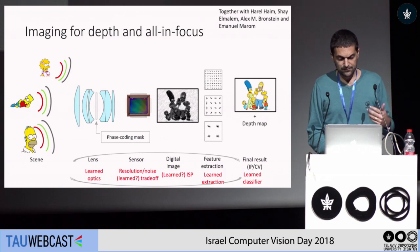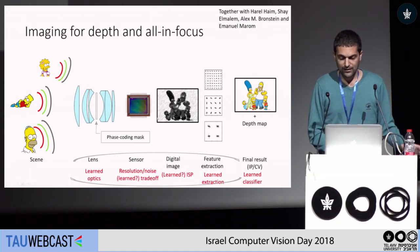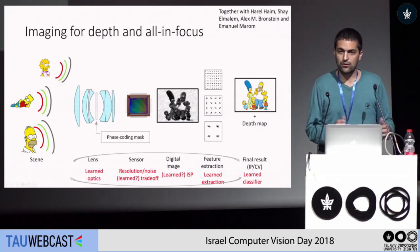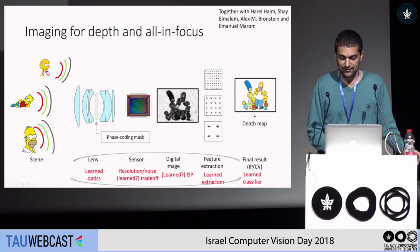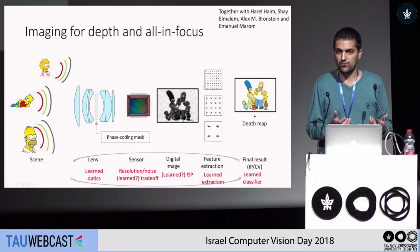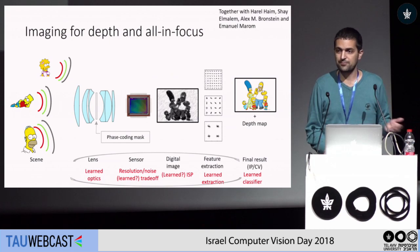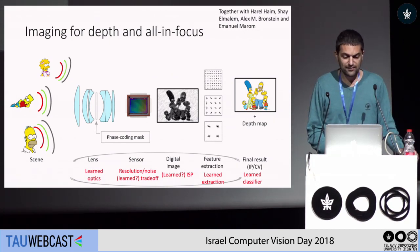Instead of designing this mask by ourselves, we put this mask as part of the learning process. I think this is a direction we should start going in. Most works look at the raw image or a coded raw image and then apply deep learning algorithms on it. I think we should start considering freeing the parameters of the optics we are using and putting them as part of the network training. I will show how we did it in this work.